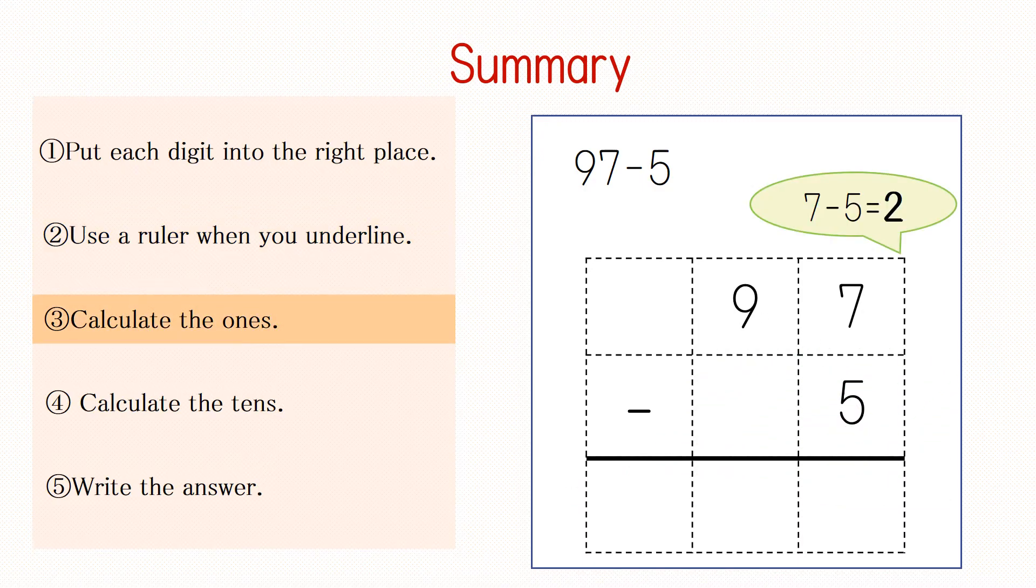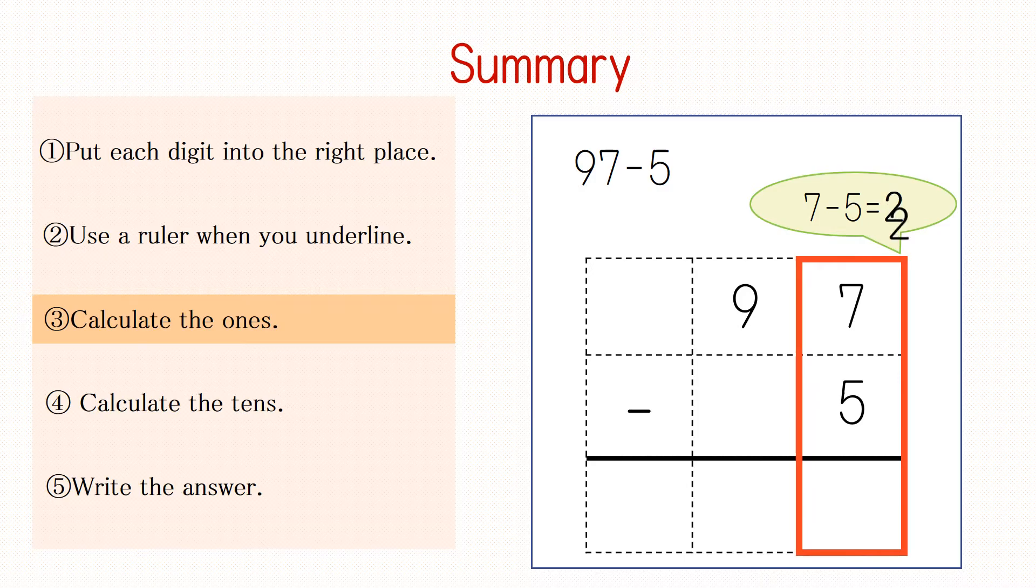Calculate the ones. 7-5 equals 2. So, write 2 to the ones place.